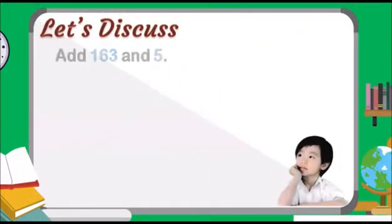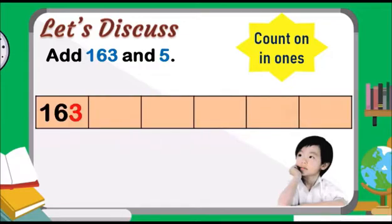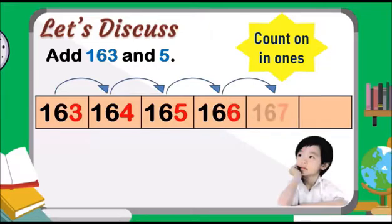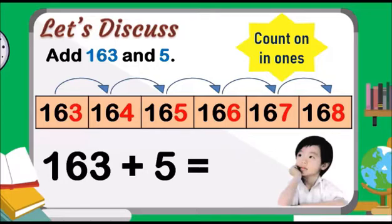Let's discuss. Let us add 163 and 5. Let us add these numbers by counting on in ones, starting from 163. We have 5 empty boxes for 5 ones. Let us start counting: 163, 164, 165, 166, 167, 168. So, 163 plus 5 is equal to 168.